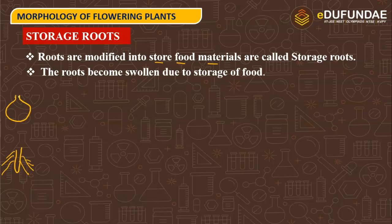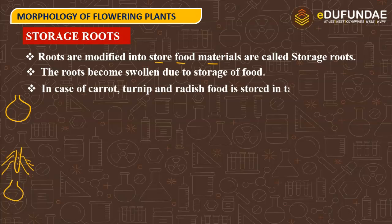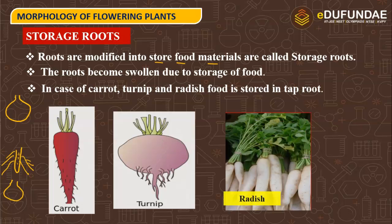Root gets swollen due to storage of food. In the case of carrot, turnip, and radish, food is stored in the tap root. The tap root becomes modified and swollen.